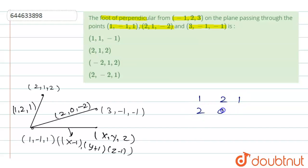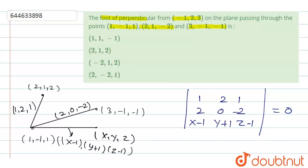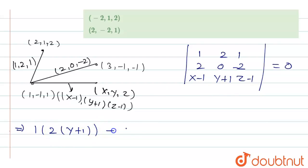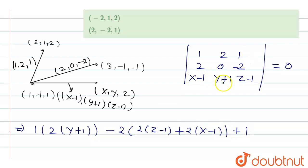So we write the determinant as: row 1 is (1, 2, 1) — wait, using the computed direction vectors. The determinant is set up with rows (1, 2, 1), (2, 0, -2), and (x-1, y+1, z-1), all equal to zero. Expanding this determinant: x times (0·(z-1) - (-2)·(y+1)) minus 2 times (2·(z-1) - (-2)·(x-1)) plus 1 times (2·(y+1) - 0) equals zero.